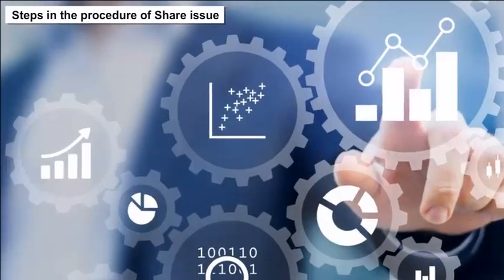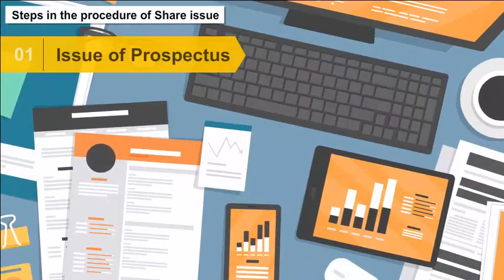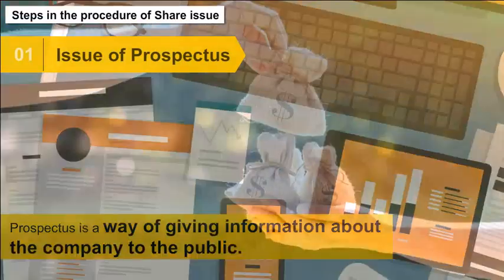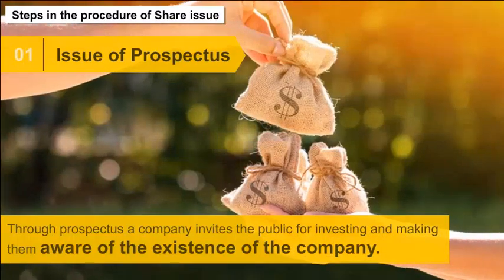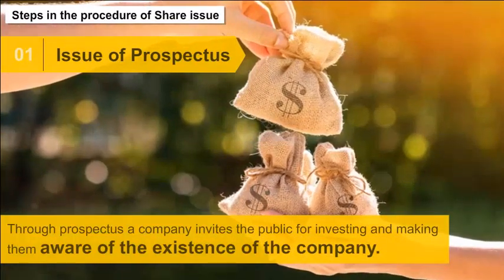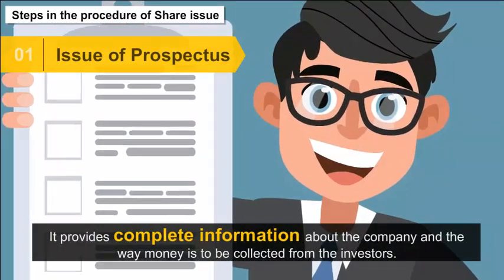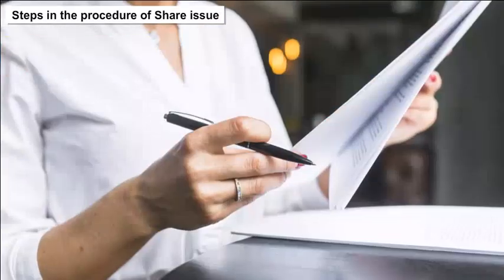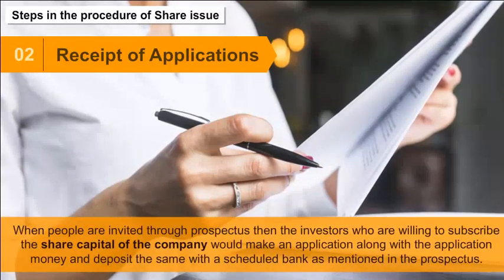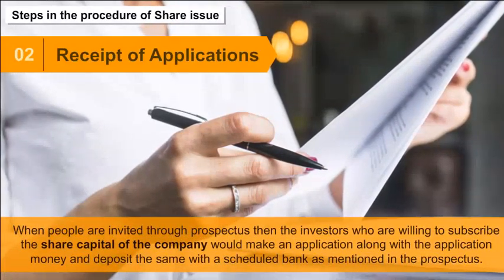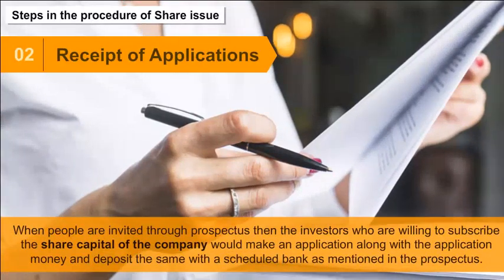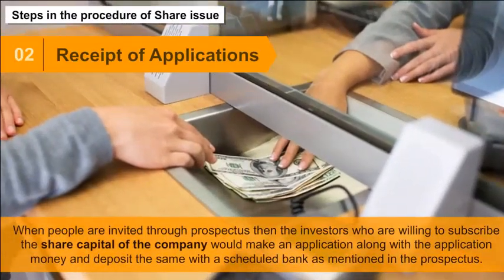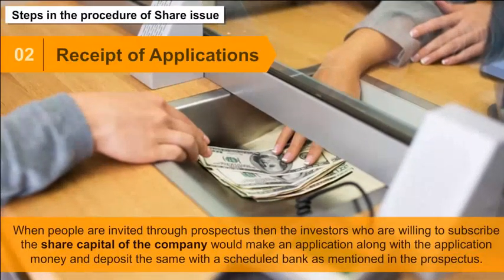Issue of Prospectus: A prospectus is a way of giving information about the company to the public. Through a prospectus, a company invites the public to invest and makes them aware of the company's existence. It provides complete information about the company and the manner in which money is to be collected from investors. Receipt of Applications: Investors willing to subscribe make an application along with application money deposited with the scheduled bank mentioned in the prospectus.